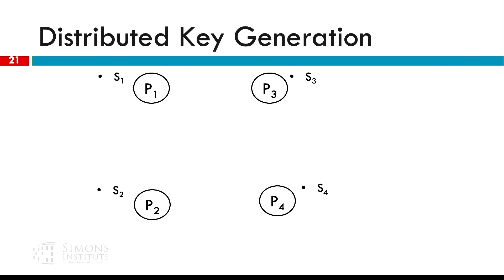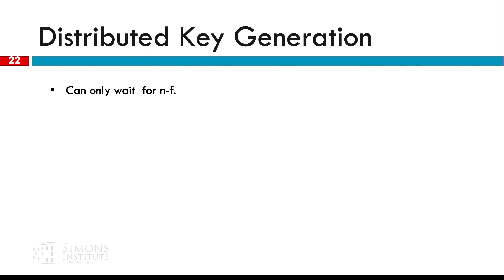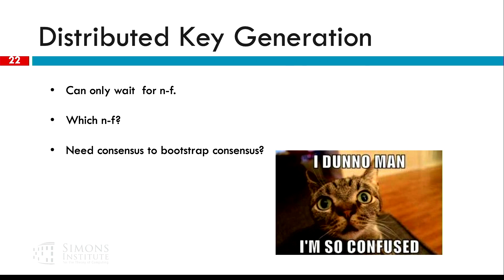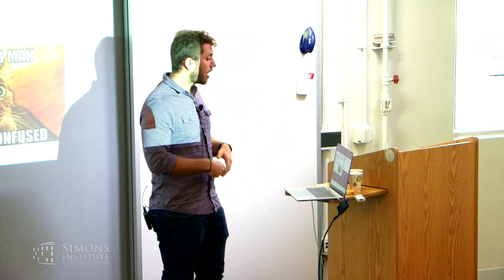That can work in a synchronous environment, but in the asynchronous case, we might have a malicious party that might not reply. We can't wait for all parties to reply and then decide which are malicious — we have to wait for n minus f. But which n minus f parties? In the asynchronous case, the adversary might actually be replying to us and slowing down some other nodes. So it seems that we kind of need consensus — we need to decide on which parties actually did their job correctly in order to bootstrap consensus.